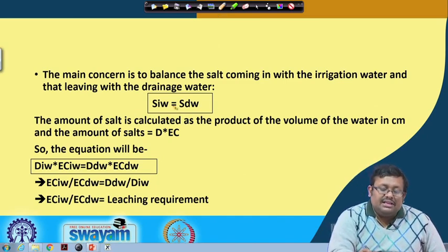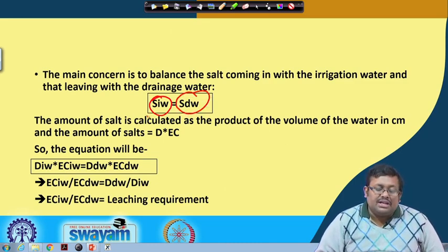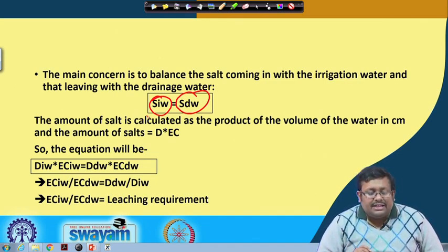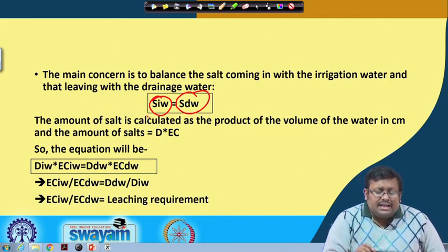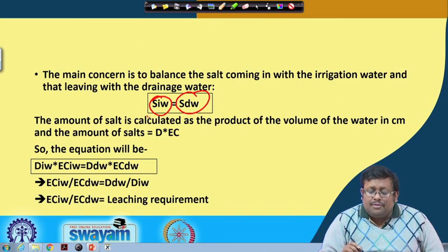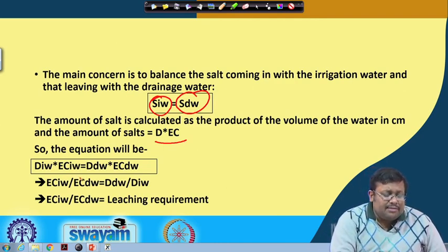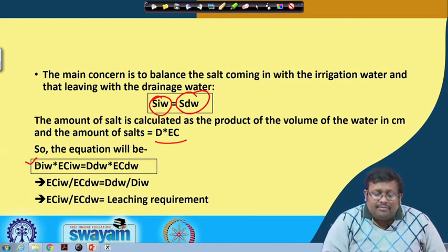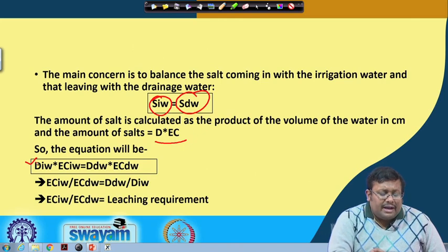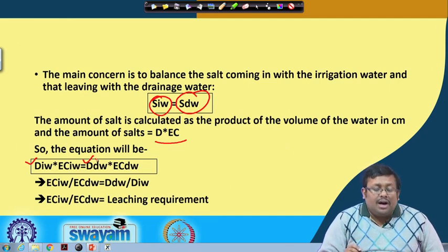We are concerned about whether the salt coming through irrigation water equals the salt moving through the drainage water. The amount of salt is calculated as a product of the volume of water in centimeters and the amount of salt — the multiplication factor D multiplied by EC. The equation is D_iw × EC_iw, where D_iw is the volume of irrigation water, D_dw is the volume of drainage water, and EC_iw and EC_dw are the respective electrical conductivity or salt concentration.